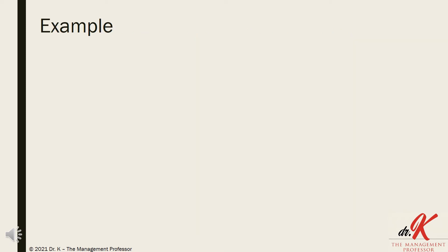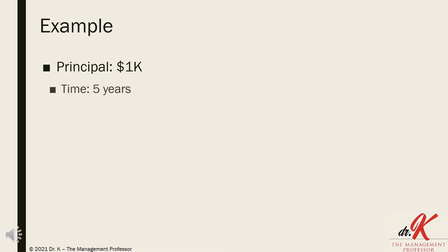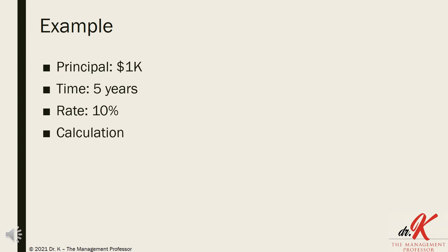Let's walk through an example. Let's assume you have $1,000 to invest. This $1,000 is known as your principal amount. We want our money to work for us, so we're going to invest it for five years at a guaranteed rate of 10%, for example. It's a pretty simple calculation, actually. In year one, we take our initial $1,000 and we multiply that by 10%. That earns us $100, so by the end of the first year, we have $1,100 in our pocket.